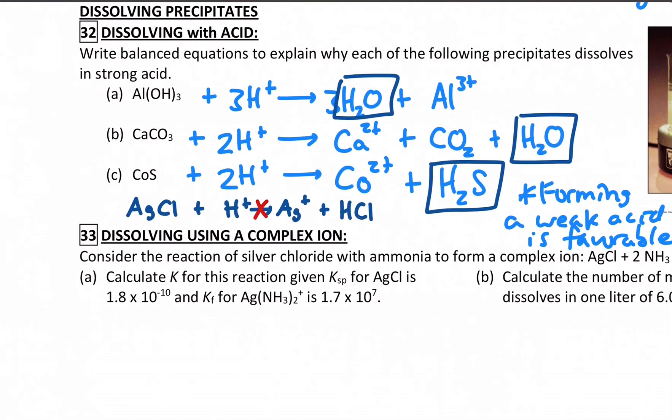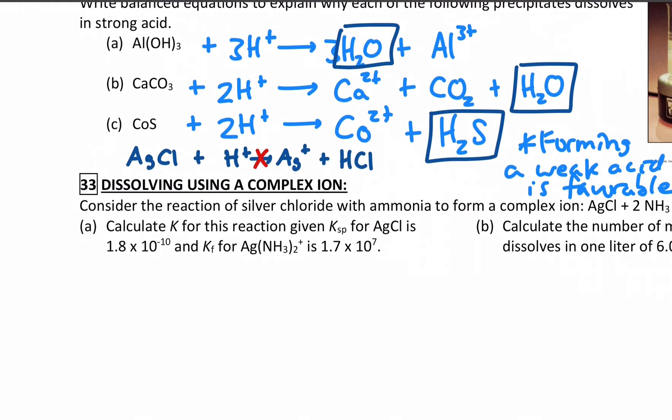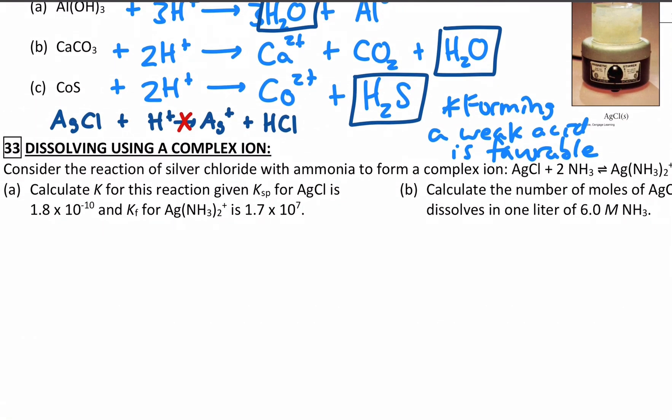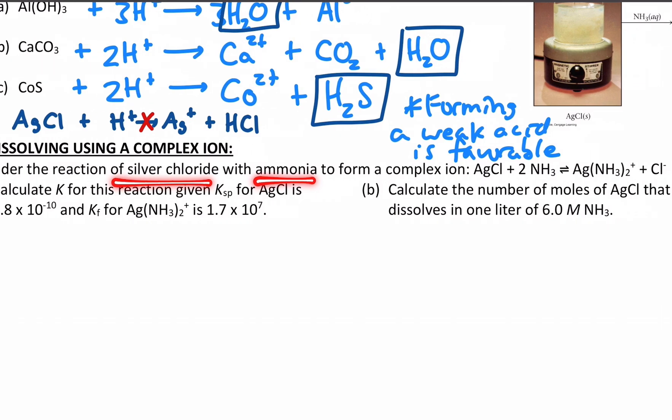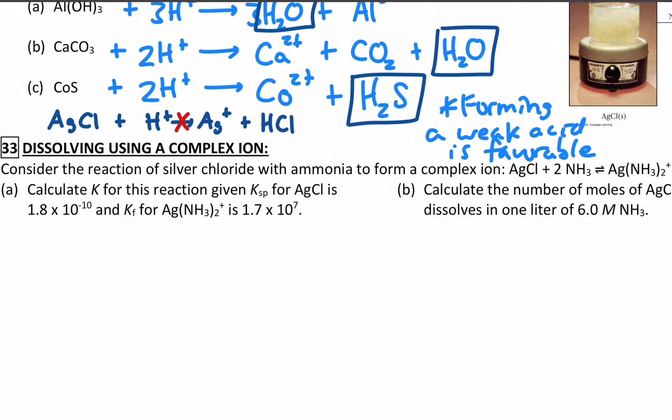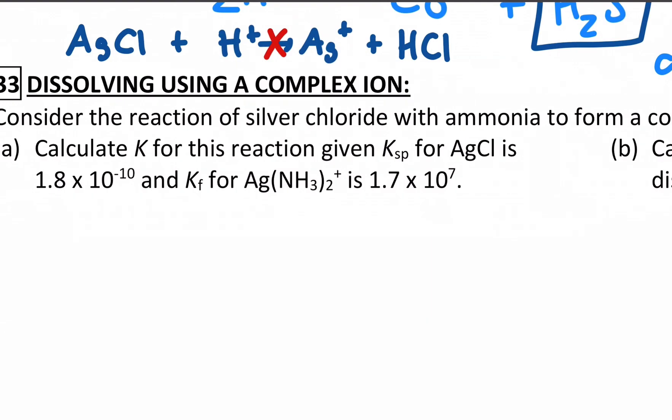So what do we do when we have things that don't dissolve in acid? The most common answer to that is we use complex ions. So we're going full circle and showing how complex ions can actually dissolve insoluble precipitates. So consider the reaction of silver chloride with ammonia to make the complex ion, the silver ammonia complex, and then leftover a chloride. The first thing is we need a value of K for this reaction, given a Ksp and a Kf, the formation of the complex.